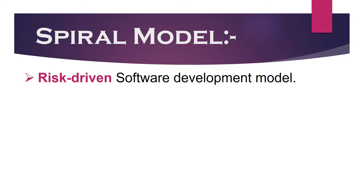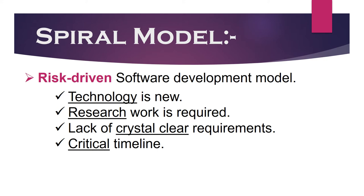Let's see a few highlights first, which we can build upon in the coming slides. Spiral model is a risk-driven software development model, meaning it is more suitable for complex, long-term and high-risk projects. By risk, I mean there could be many risk factors like new technology, research, unclear requirements, or critical timelines where the product needs to be released to market as soon as possible. All these situations can impact product timeline and need to be considered as risk during development.